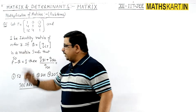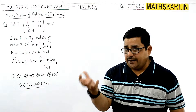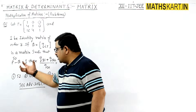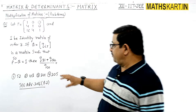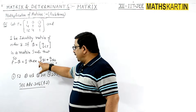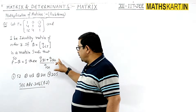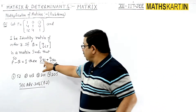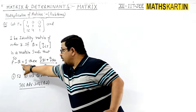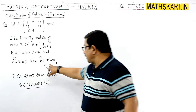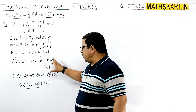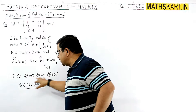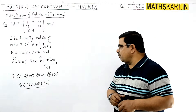So Q equals P to the power 50 minus I. We have to find Q31 plus Q32 divided by Q21. So we need to find the elements at the 3,1 position, the 3,2 position, and the 2,1 position from the matrix Q. The question has four answer options.